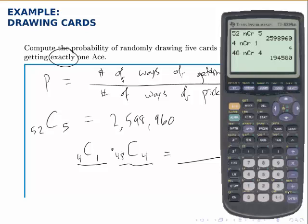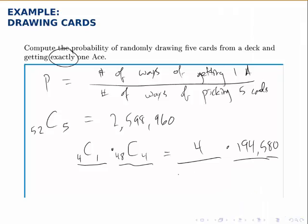So 4C1 is 4 and 48C4 is 194,580. If we multiply those two together, we get 778,320.